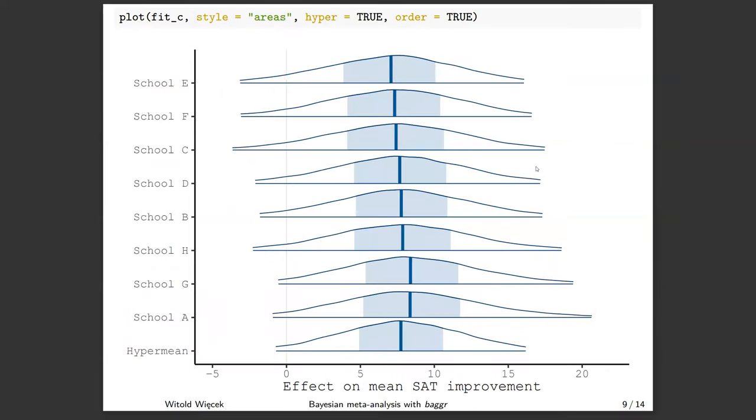Here is one of the examples of plots that we have in Bagger. It could be a forest plot just as well. This is just a slightly different visual flair. Here we can see that, in fact, in this random effects model, all of the estimates are pulled very strongly toward the hyper mean, which is at the bottom of this plot.